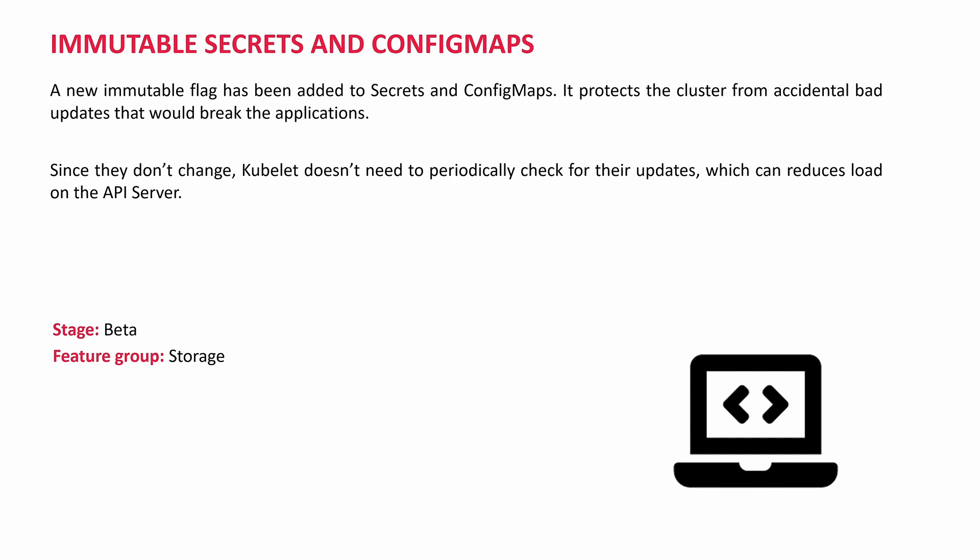Immutable Secrets and ConfigMaps — it's a beautiful feature, beta, feature group: Storage. In version 1.19, a new immutable flag has been added to Secrets and ConfigMaps. It protects the cluster from accidental bad updates that would break the applications. Also, since they are immutable, they are not going to change, so the Kubelet doesn't need to periodically check for Secrets and ConfigMap updates. That will improve the performance of the API server. Just like creating a new container — if you want new secrets, you have to create a new secret; you can't update the existing one by enabling the flag to true.